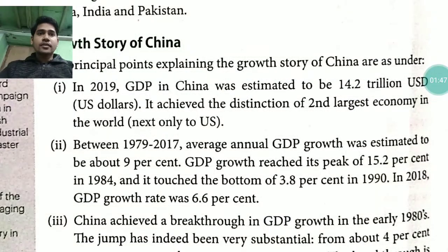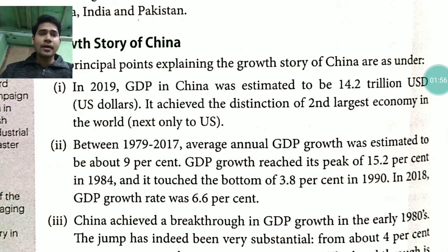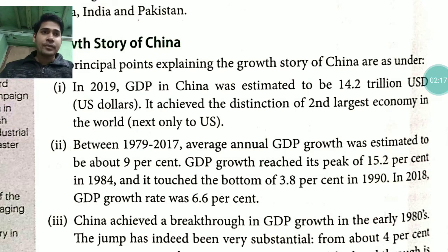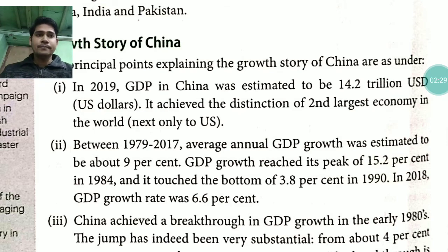Between 1979 and 2017, the average annual GDP growth of China was 9%. GDP growth reached its peak at 15.2% in 1984, and it touched the bottom at 3.8% in 1990. In 2018, the growth rate came back up to 6.6%.